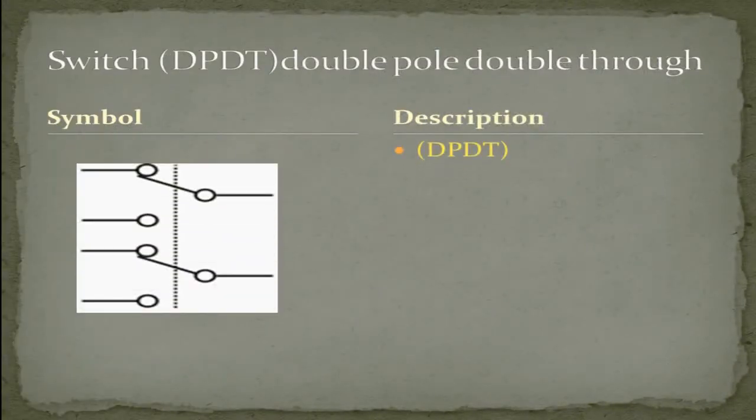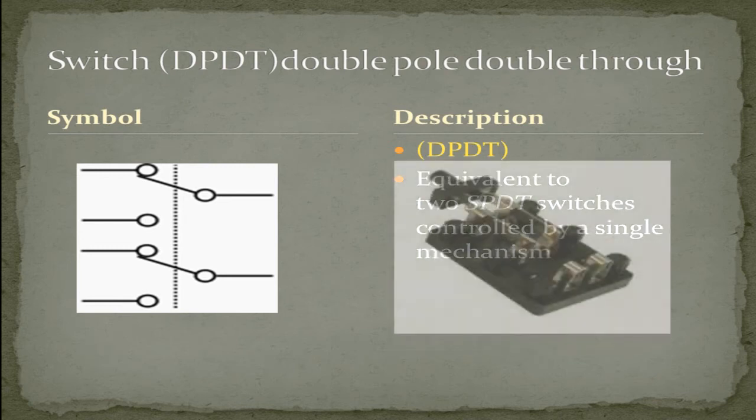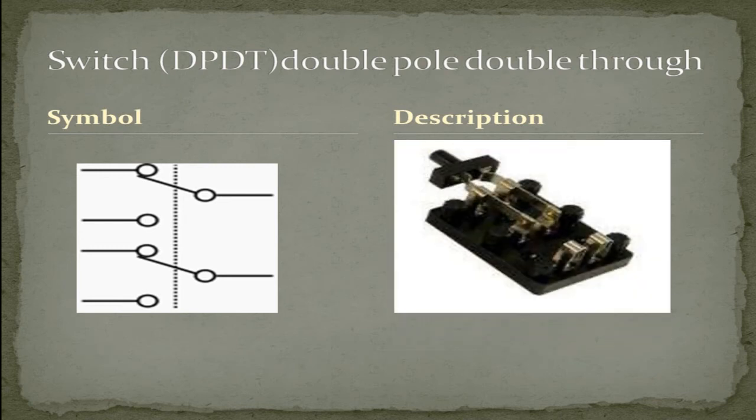A double pole, double throw switch. Equivalent to two single pole, double throw switches controlled by a single mechanism. As you can tell from this picture, you have two commons and four lines.